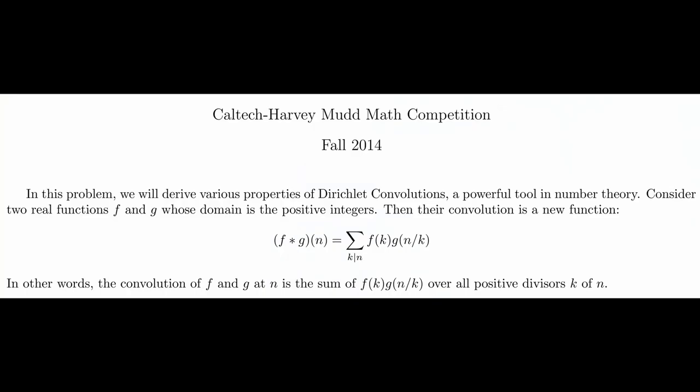Here on the screen we can see the definition of the Dirichlet Convolution. Consider two real functions f and g whose domain is the positive integers. Their convolution is a new function f star g, which takes in an integer n and is the sum where k divides n of f of k times g of n over k.